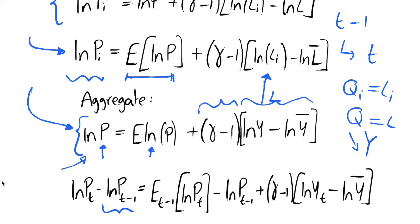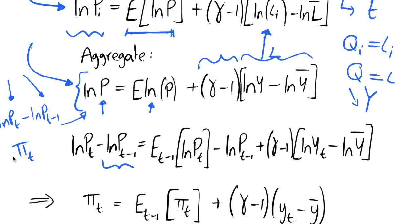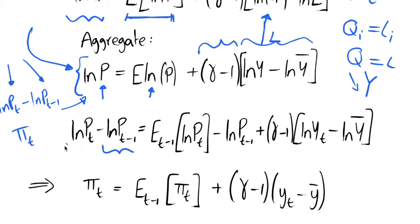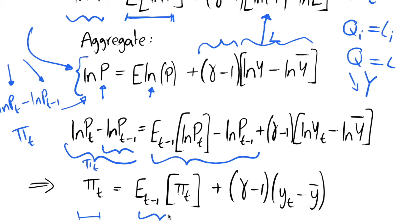Doing this, ln P_t minus ln P_{t-1} is just an approximation of the inflation rate — the change in (log) price between the two periods is the inflation rate. So this term on the left-hand side is simply inflation. Similarly, with the expectations operator, we have the expectation of ln P_t minus ln P_{t-1}, which equals the expectation of the inflation rate in period t.